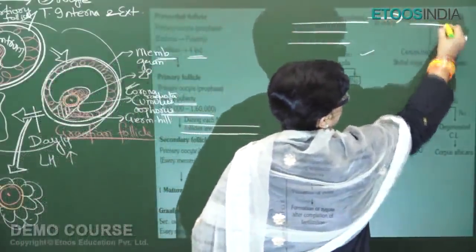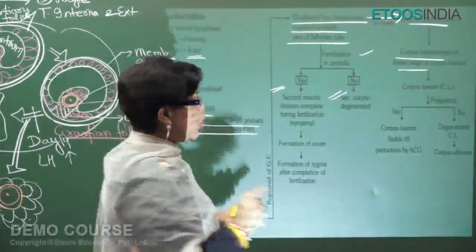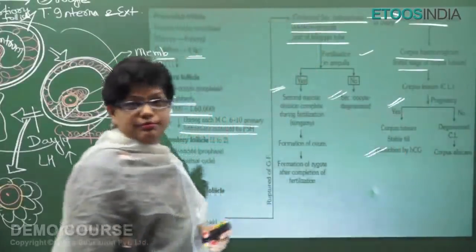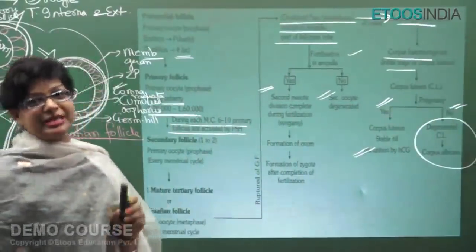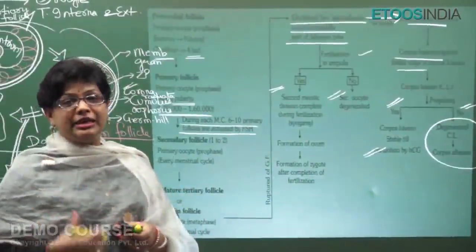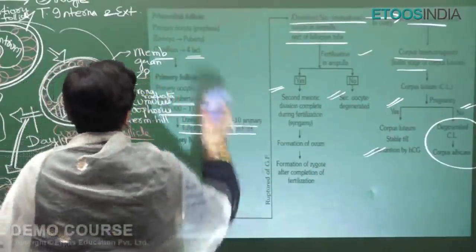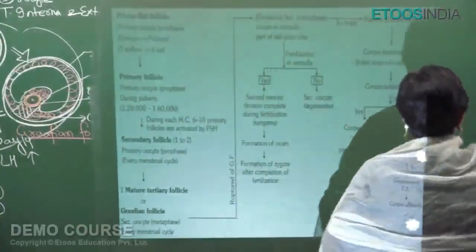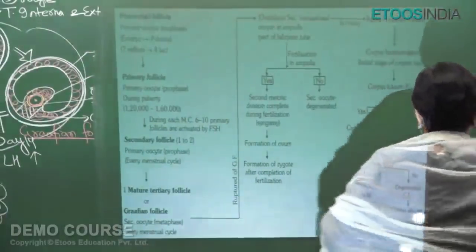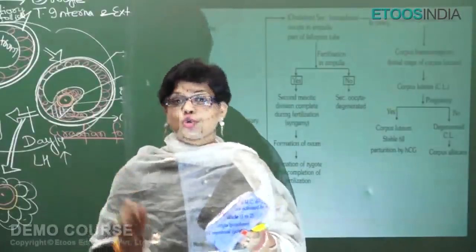If fertilization occurs, the corpus luteum is maintained by HCG until 12 weeks and produces progesterone, the pregnancy hormone. If there is no pregnancy, the corpus luteum degenerates into the corpus albicans. Remember: primordial follicle, primary follicle, and secondary follicle all contain the primary oocyte arrested in the diplotene stage of meiosis 1. The tertiary follicle and Graafian follicle contain the secondary oocyte arrested in metaphase 2.